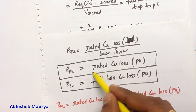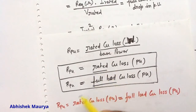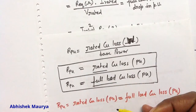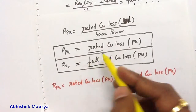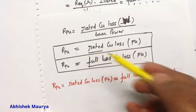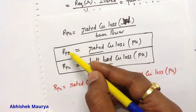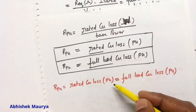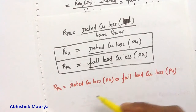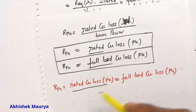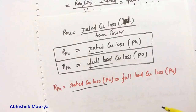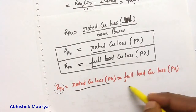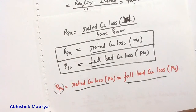The rated value is the full load value, so rated copper loss equals full load copper loss. Therefore, per unit equivalent resistance equals rated copper loss in per unit, which also equals full load copper loss in per unit. So if we know the value of R per unit, we know the full load copper loss in per unit.